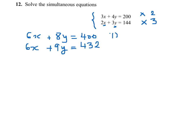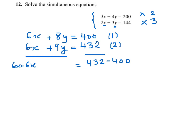Now I'll name this equation 1 and this equation 2, and I will do equation 2 take away equation 1. So I get 432 take away 400. Then 6x take away 6x, and 9y take away 8y. This in turn gives me y equals 32.